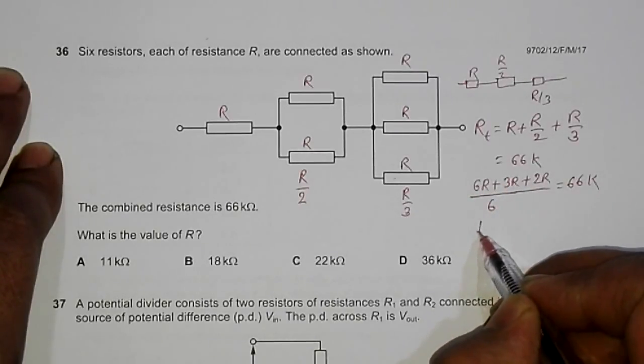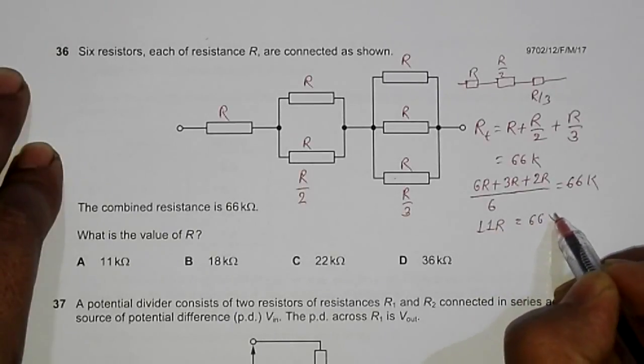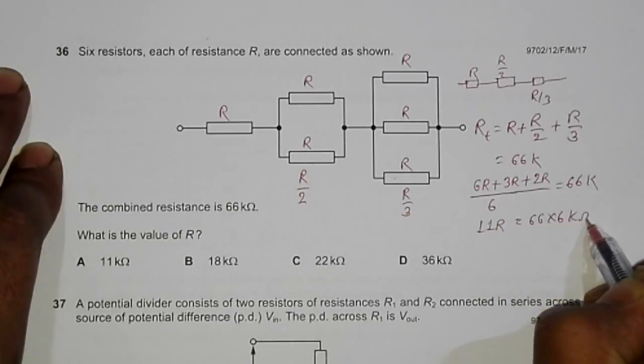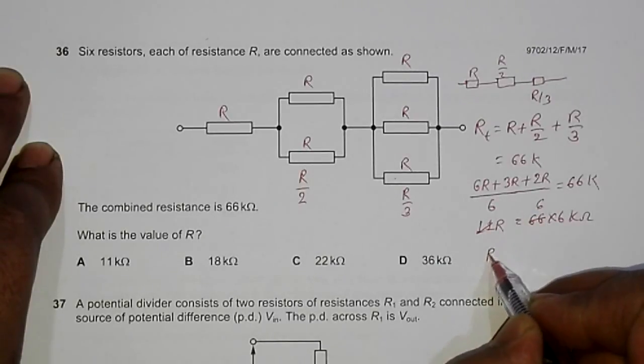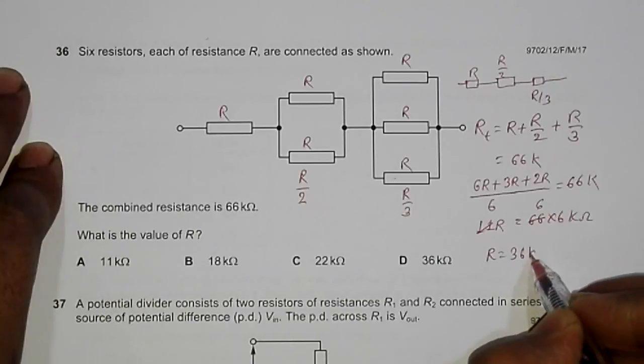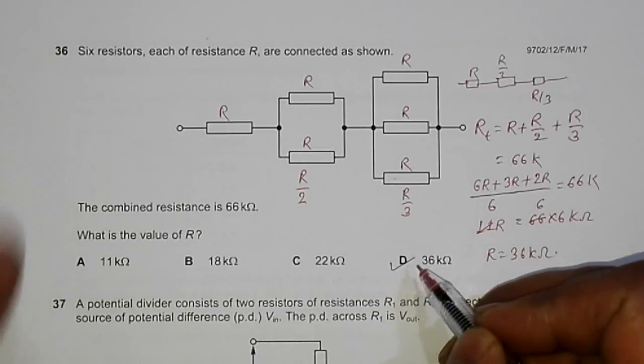So R is equal to 36 kilo ohms, which is our choice D here.